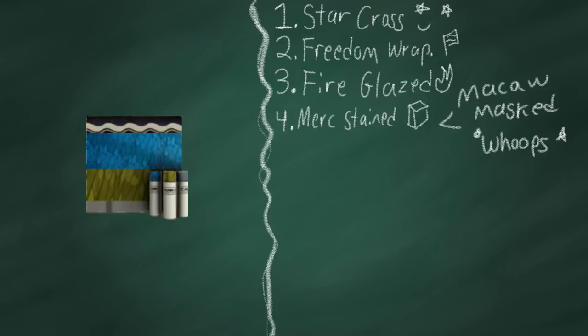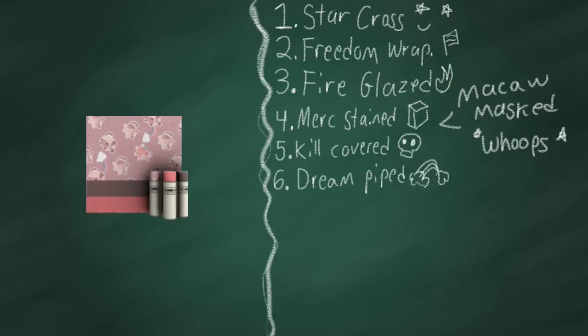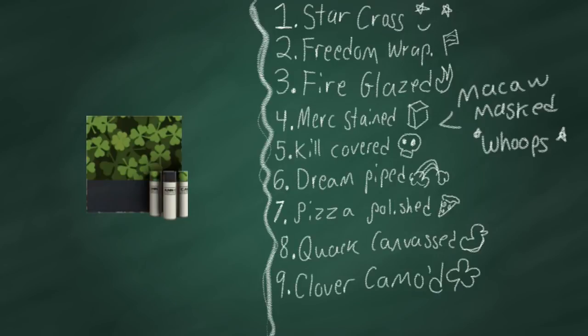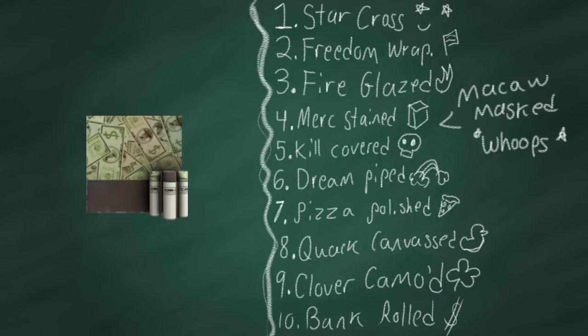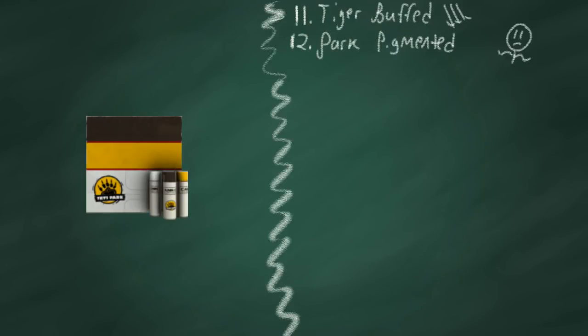5.7% macaw masked, 5.3% kill covered, 4.9% dream piped, 4.5% pizza polished, 4.4% quack canvassed, 4.3% clover camoed, 4.2% bank rolled, 4.0% tiger buffed, 3.8% park pigmented.